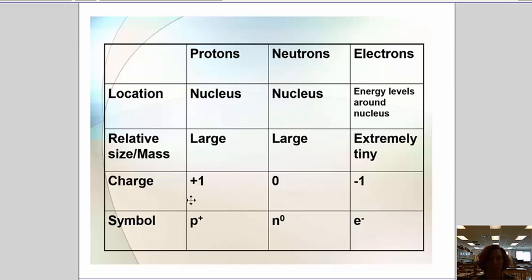Charges: protons are plus one, neutrons are neutral with no charge, electrons are negative. And then symbols that you're going to see me use: protons with a little plus sign (p⁺), neutrons with a zero (n⁰), electrons with a negative (e⁻).